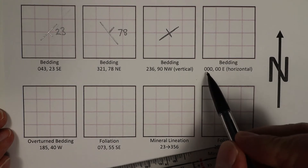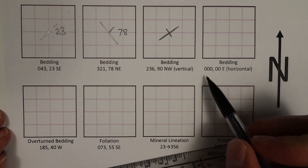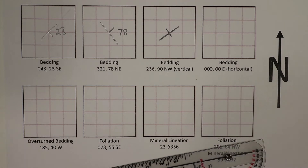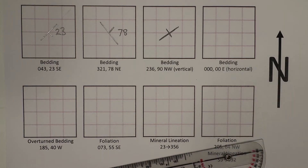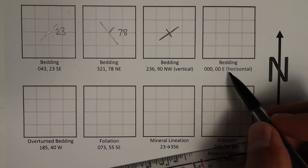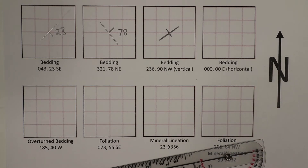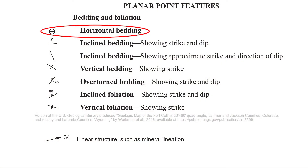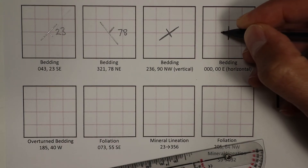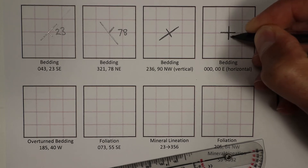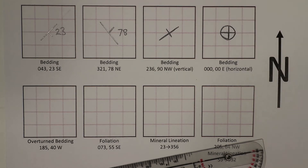The next example is horizontal. The strike orientation is actually irrelevant if the dip is zero degrees, because a horizontal plane strikes in all directions. Just to emphasize that, put the word 'horizontal' to indicate this is a horizontal structure. In the map legend, horizontal bedding is represented by a circle around a plus sign. Plotting that is very easy — put a plus sign and draw a circle around it.